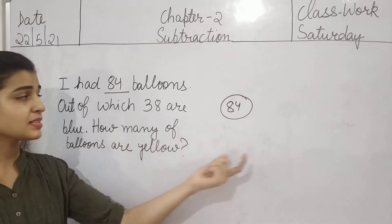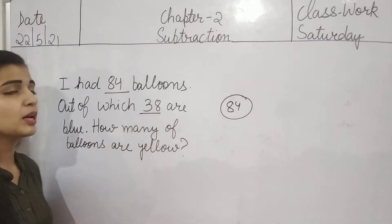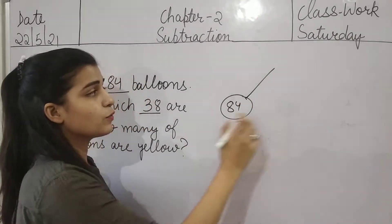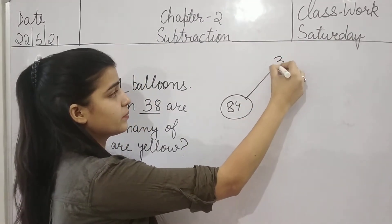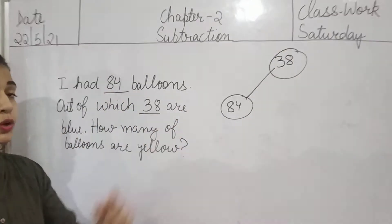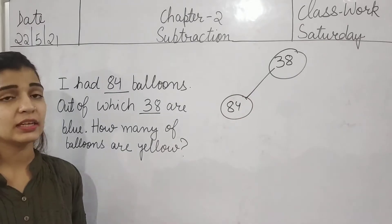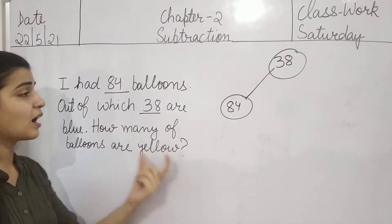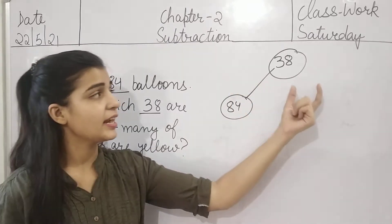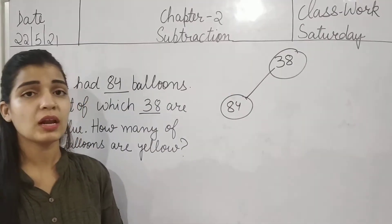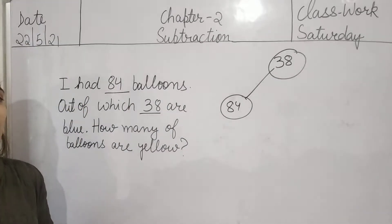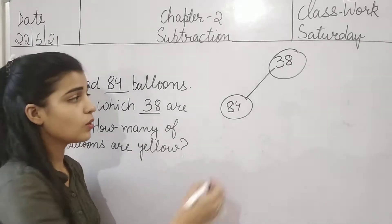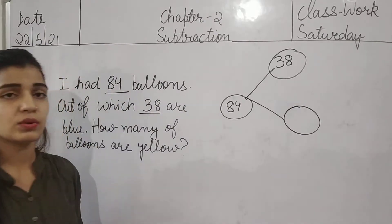Out of which 34 are blue — jis mein se jo 34 hai wo blue hai. It means the first part of 84 is 38 which is blue — jis ka matlab 84 balloons mein se 38 balloons blue hain. How many balloons are yellow? If 38 balloons out of 84 are blue, how many balloons are yellow? It means we have to find out the number of balloons which are yellow — hame wo number of balloons nikalna hai jo ki yellow hain.